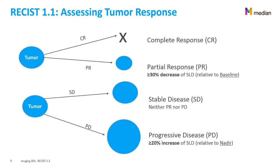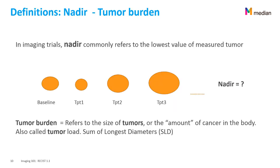If the SLD — sum of longest diameters — increases more than 20% from the nadir, the patient is considered progressive disease. The nadir is the time point at which the tumor burden was the smallest. Progressive disease is when there is a 20% increase between the nadir and the time point under study. Tumor burden is sometimes also referred to as tumor load or sum of longest diameters.